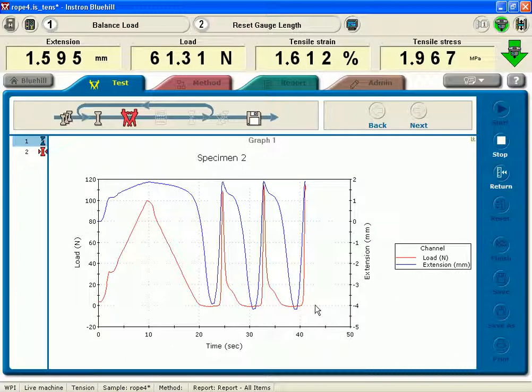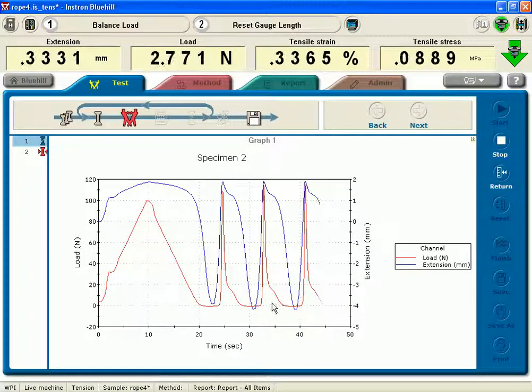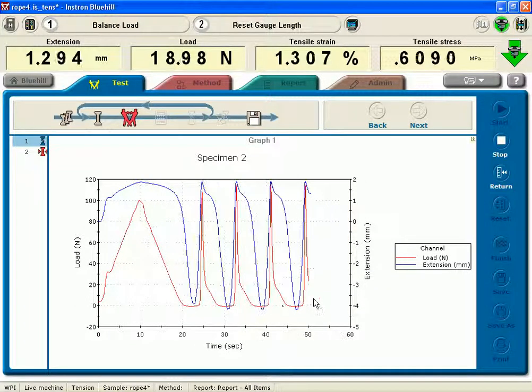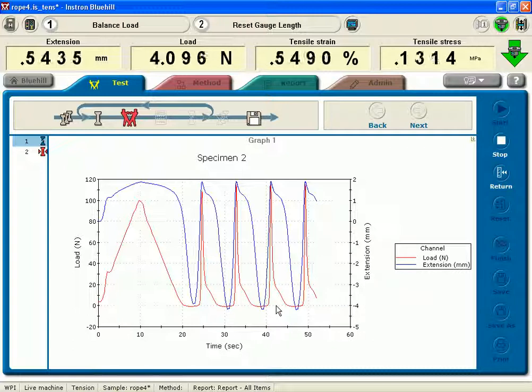Goes down to zero, shoots up, and again, there's some give in the material, so it's not able to ramp at 600 newtons per minute and then come back down at 600 newtons per minute because of the compliance of the sample and the non-linearity of the sample. Again, this is polypropylene rope.